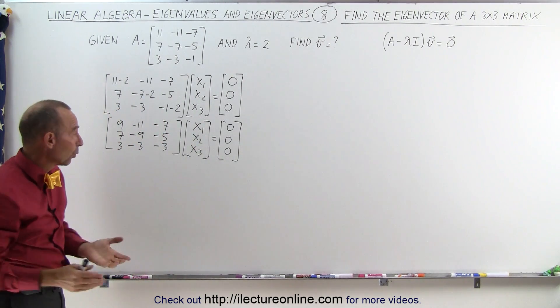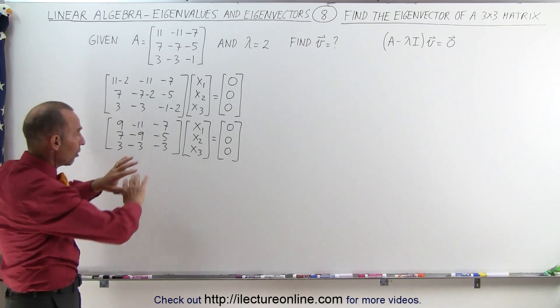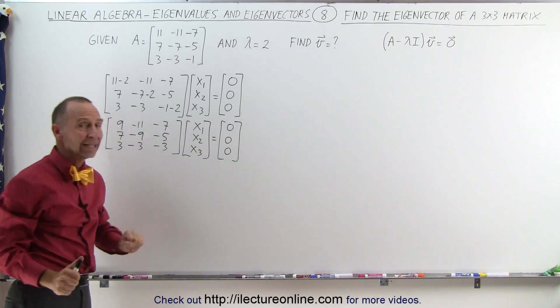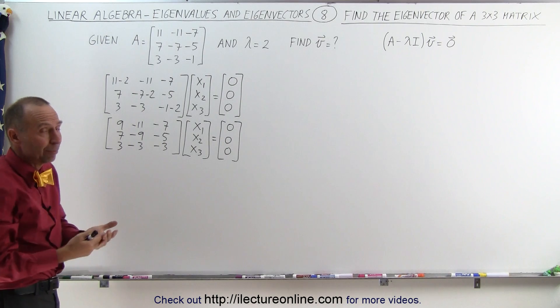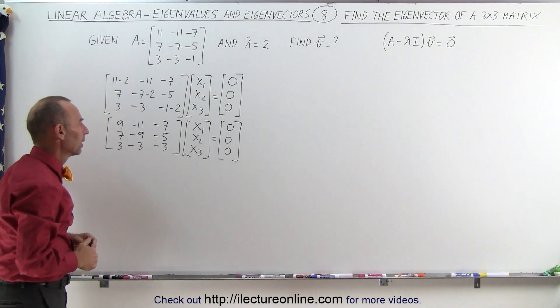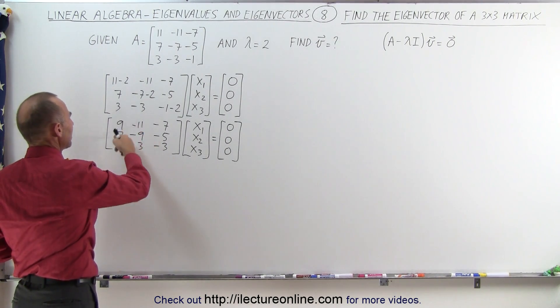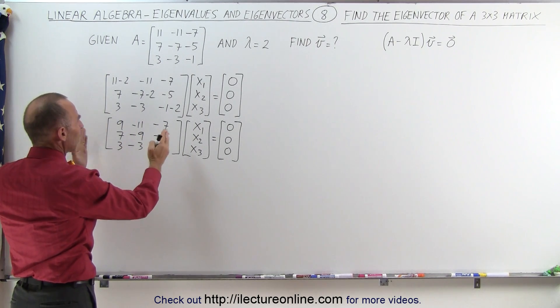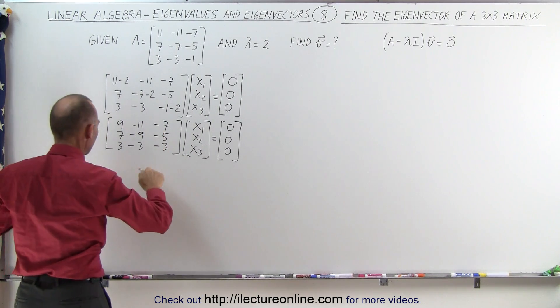And we're supposed to solve for X1, X2 and X3. That's all solved this system of linear equations and that will then be the eigenvector. The way to do that is to try and make these into zeros. So in other words, we're going to write an augmented matrix. Let me do that now.